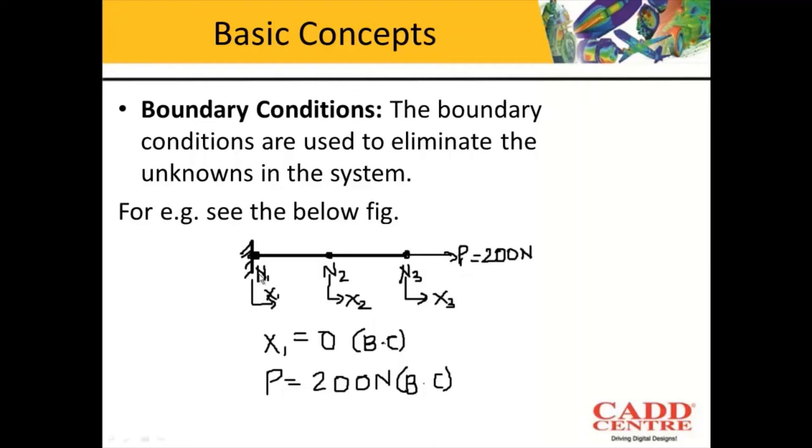At node number one, the displacement X1 will be completely zero because the degrees of freedom here is zero; there is no translation nor rotational movement, hence there will be no displacement. So X1 equals zero becomes a boundary condition. At node number three, there is a load acting of 200 newtons, so P equals 200DN also becomes a boundary condition.